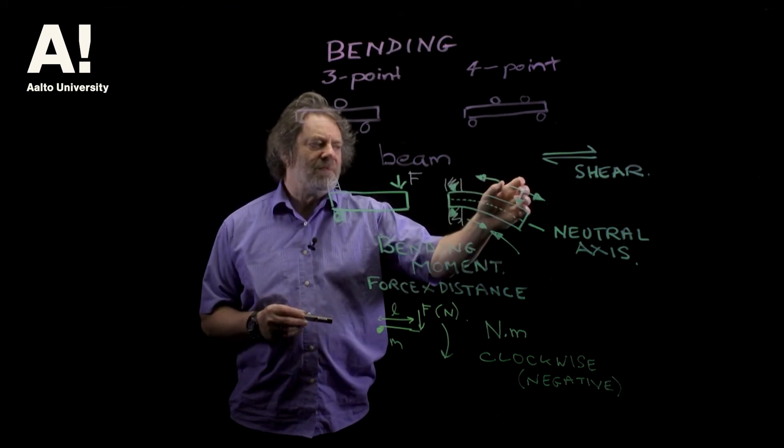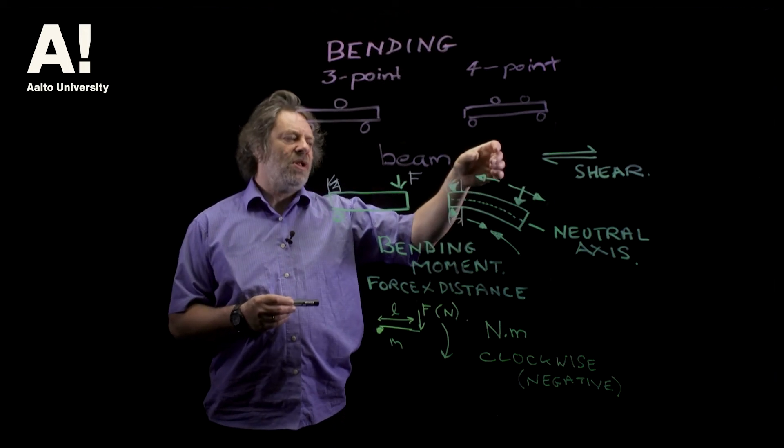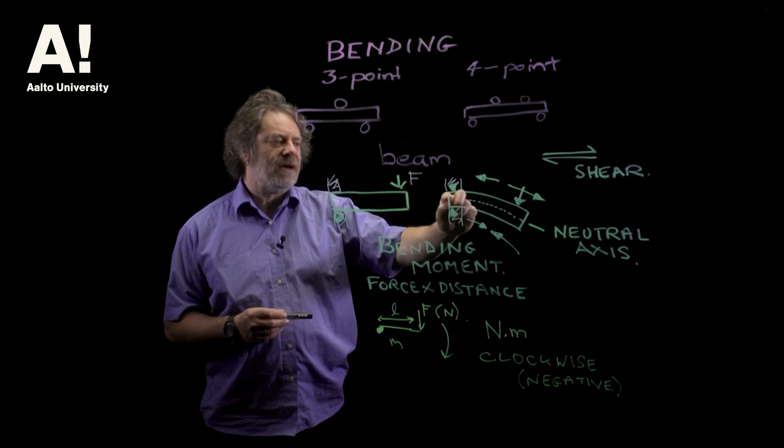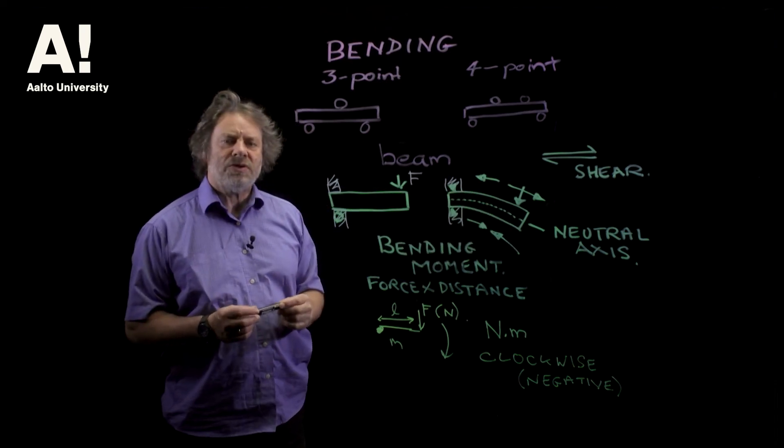So at some point, the tensile stress and the compressive stress are going to cancel out, and that forms what's called the neutral axis.